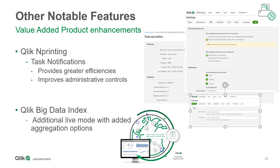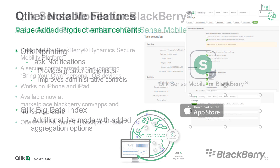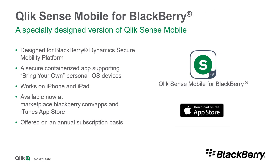Other improvements include task notifications in Qlik and printing, extended Qlik Big Data Index functionality. We have also released the iOS app Qlik Sense Mobile for BlackBerry, providing both online and offline Qlik Sense capabilities built on top of the BlackBerry Dynamics Secure Mobility platform.